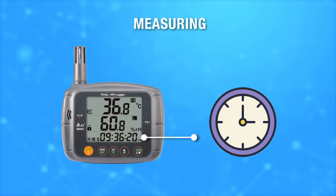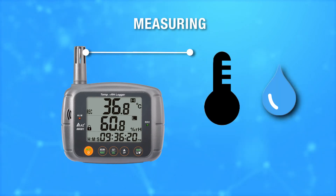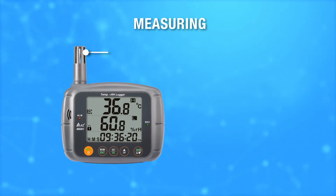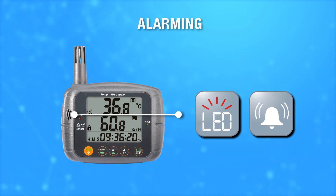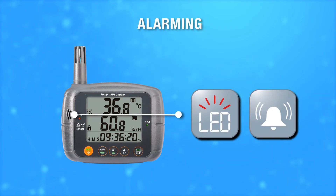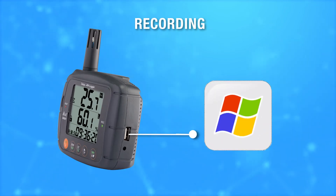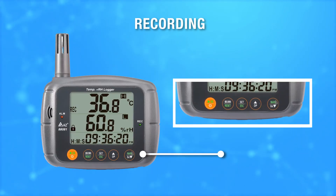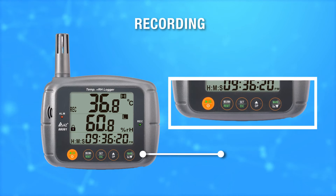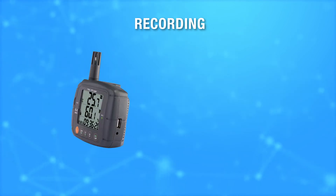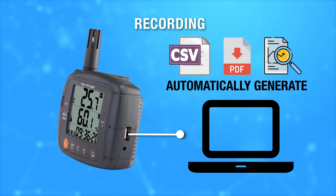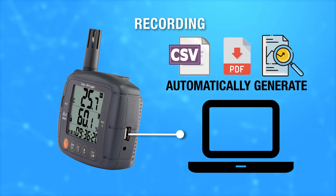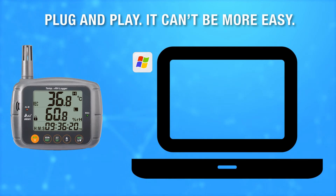Large display with time stamp. High accuracy sensors. Calculate dew point temperature instantly. Programmable buzzer and LED alarm. Plug and play on Windows computer, or config by keypad directly in urgent situations. Recorded data can be analyzed automatically and saved as PDF or CSV files into your computer.